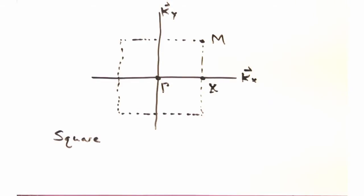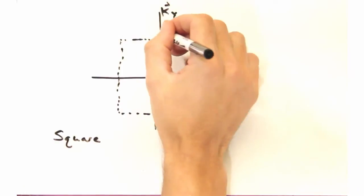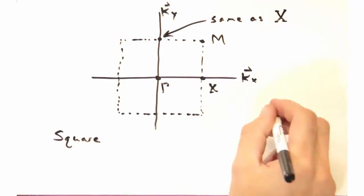Oh, so Y would be at the top edge, yeah? Not quite. For a square, X and Y are the same point due to symmetry, so we don't bother plotting it as a separate point.